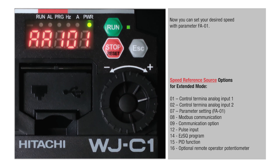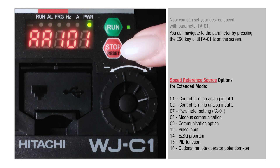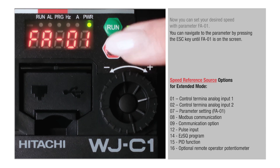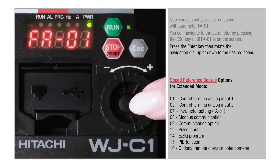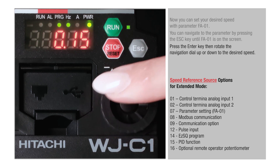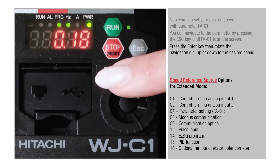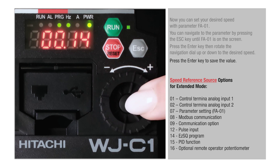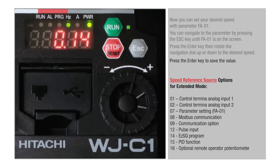Now you can set your desired speed with parameter FA01. Navigate to the parameter by pressing the Esc key until FA01 is on the screen. Press the Enter key, then rotate the navigation dial up or down to the desired speed. Press the Enter key to save the value.